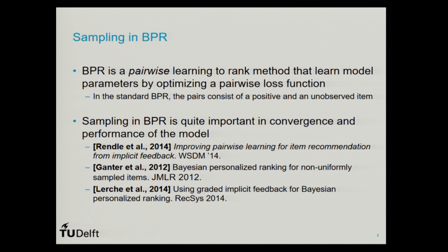Since we have too many combinations of pairs in a dataset, BPR does some sampling to select a sample of these pairs for training. This sampling is quite important for the performance and convergence of the SGD algorithm. There have been a few works on improving BPR's performance by improving the sampling method, but the main idea of all these works is to improve sampling using only a single source of feedback, whereas in this work we try to exploit multiple types of positive feedback.